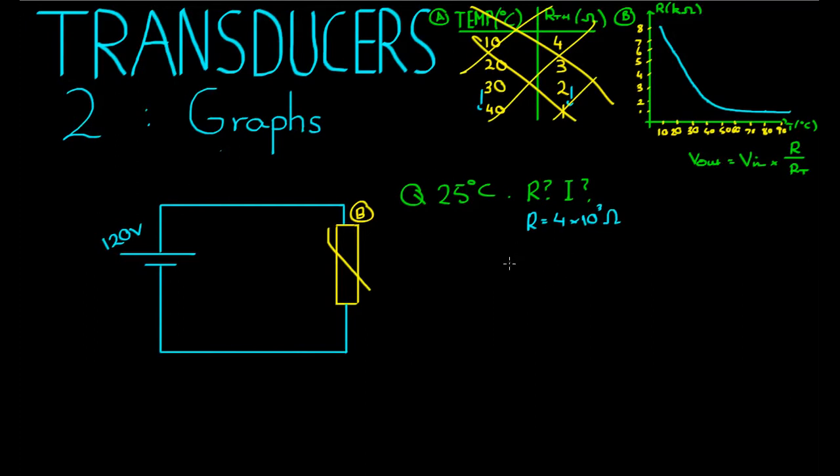And the current flowing through this circuit here. Well, since this is the only component in the circuit besides the battery, it must have 120 volts across it, potential difference. Using Ohm's law, V equals IR, so V on R equals I, we can get the current by itself, and then we just solve. So V equals 120 divided by R equals 4 times 10 to the 3. That comes to 0.03 amps.